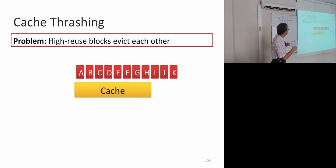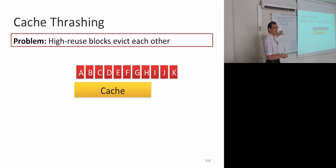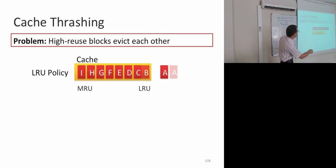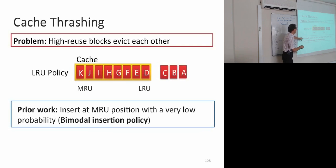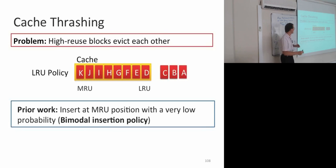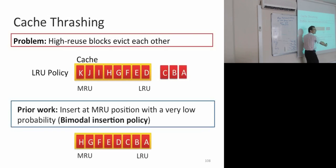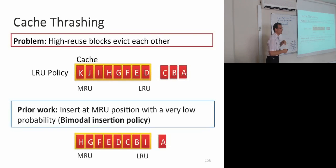Cache thrashing refers to the problem of high reuse blocks evicting each other. You could have a cyclic access pattern A, B, C, D, A, B, C, D... where they evict each other, resulting in 0% hit rate with LRU. These are high reuse blocks but they don't fit into the cache. Prior work tried to solve this with the bimodal insertion policy: insert at MRU position with very low probability, and at LRU position with very high probability. That way, you keep most of your working set in the cache and become more thrash resistant.